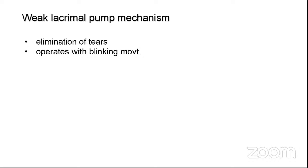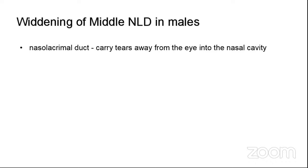The next change is a weakened lacrimal pump mechanism. This mechanism, responsible for the elimination of tears, gradually decreases as we age. It operates by blinking of the eye, caused by contraction of the orbicularis muscle, and this process slowly slows down. There is also widening of the middle nasolacrimal duct in males — the nasolacrimal duct carries tears away from the eye into the nasal cavity, but in old age it widens in size.